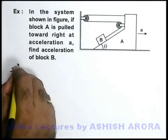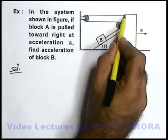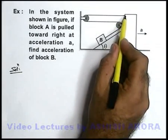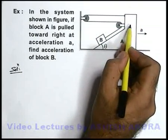Here in the situation which we can see, if block A is going toward right, the string which is connected to block A will also be pulled toward right, as well as this pulley will also be going toward right.